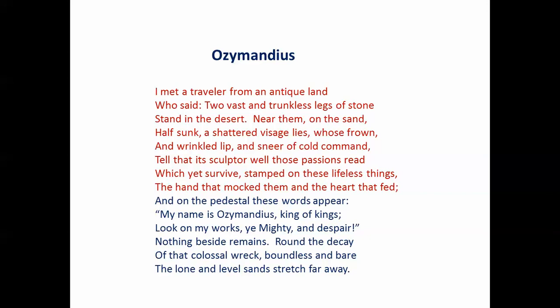Among those remnants, half sunk in the sand, was a shattered visage — a face. And even though it's shattered, the expression survives in the remnants. We know that this face was frowning. There was a wrinkled lip and a sneer of cold command — very unpleasant features. So this octave establishes a scene or a setting. But so what? Why is this significant? We find that out in the sestet.